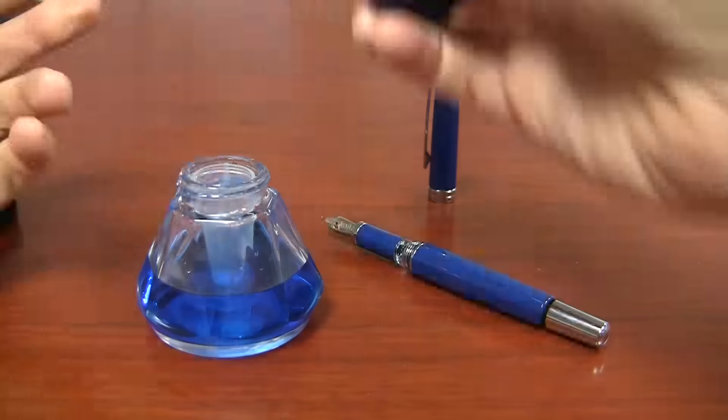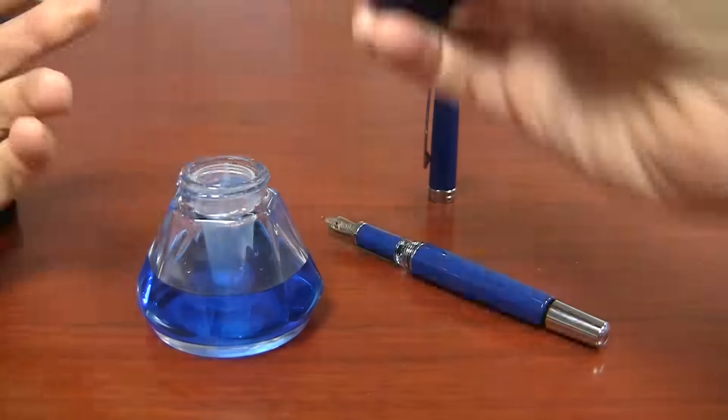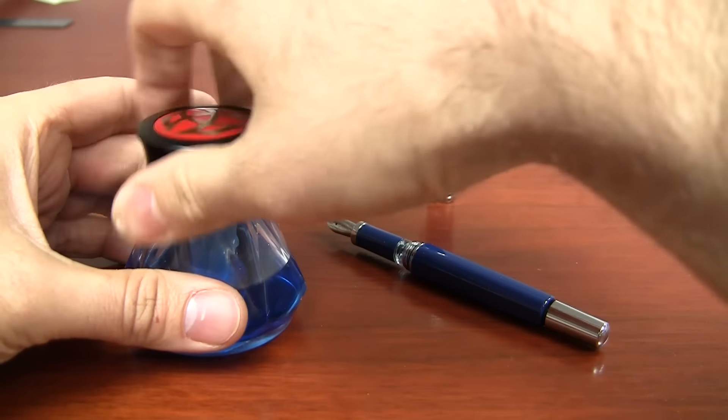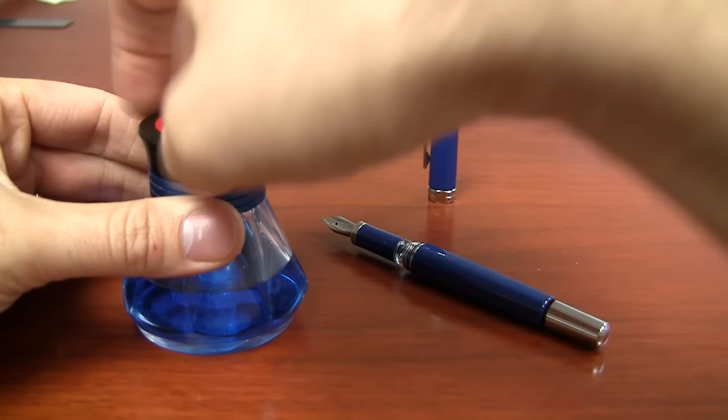Of course, you can use it just like you would any other pen, either with or without the cone insert here. You can fill it directly from the bottle, just like you would any other bottle of ink. But the neat thing about this TWSBI Inkwell, if you have one or are curious about it...